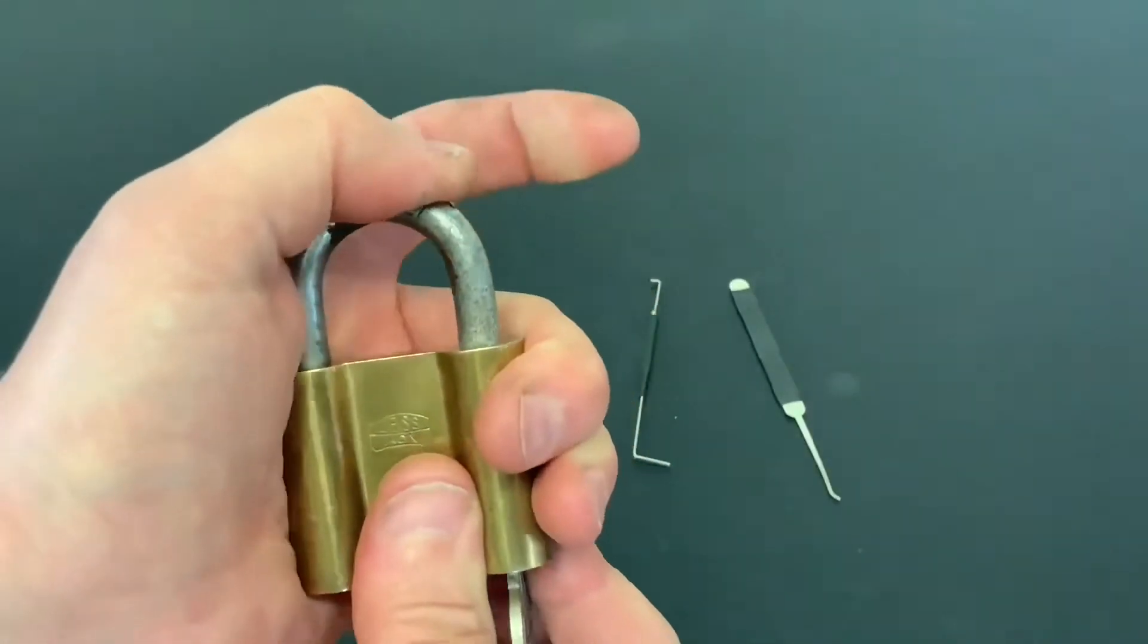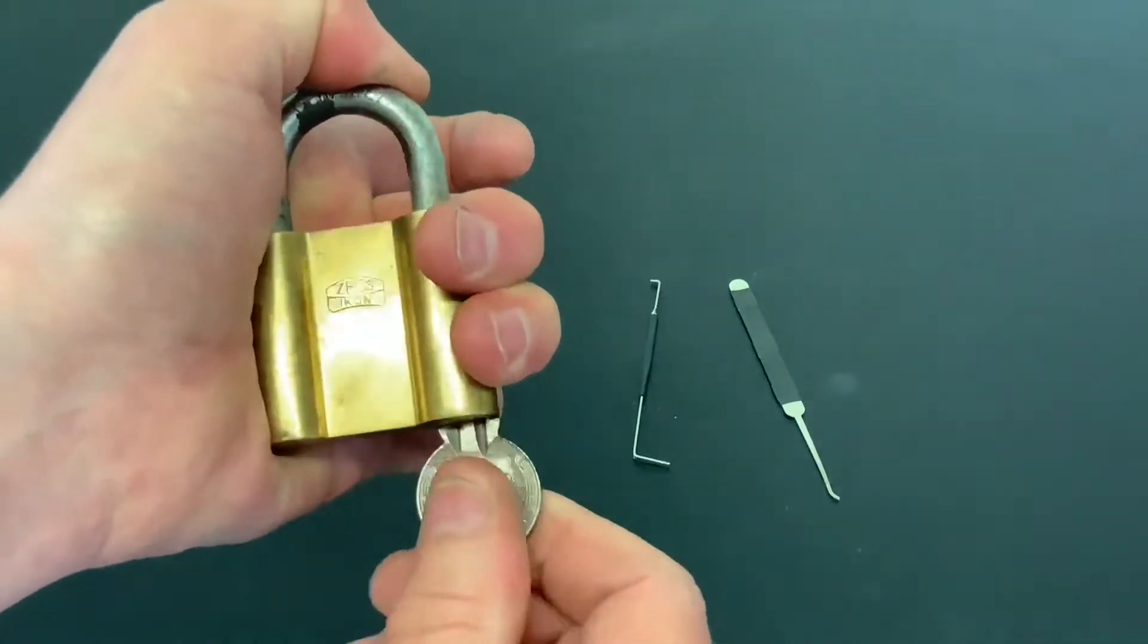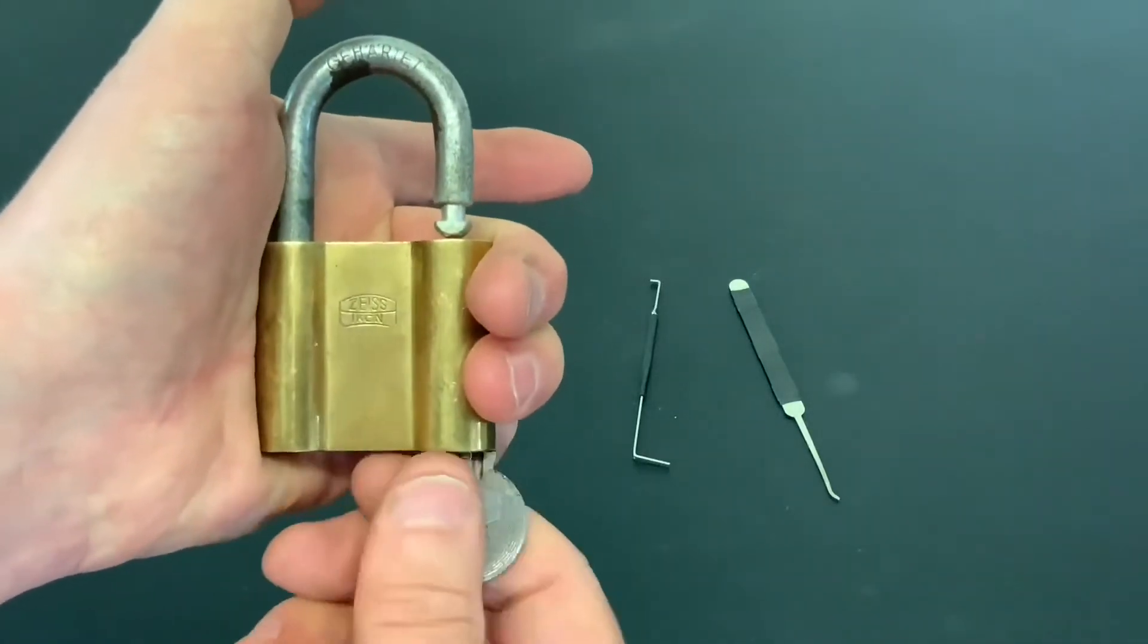So to lock it back up, you need to put the key in that position, press it in and turn it round. How cool is that?